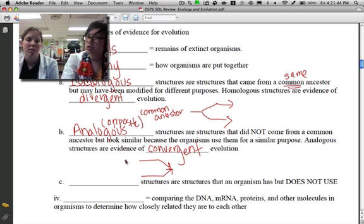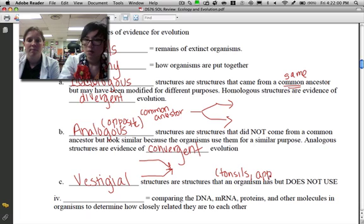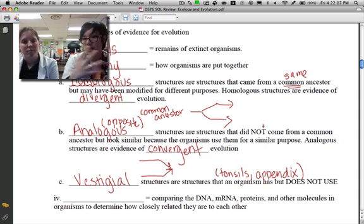Let's look at C. Vestigial structures are structures that organisms do not use. This is an important one. Examples of vestigial structures in us would be our tonsils, appendix, our coccyx or our tailbone, things that no longer have a job. But they're important because we have them because our ancestor had them. So it tells us a little bit of something about our family tree that we didn't necessarily know before.